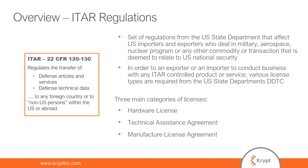To conduct business with any ITAR-controlled product or service, various license types are required from the Directorate of Defense Trade Controls, which is part of the US Department of State. These licenses cover various types of processes including shipment of hardware equipment, transfer of expertise or assistance, and technical data or information. Each of these categories can require one or more ITAR licenses to conduct a complete transaction, so a single export process may require more than one license for the same line item on the same shipment. The three main categories are hardware licenses, Technical Assistance Agreements, and Manufacturing License Agreements.